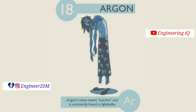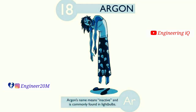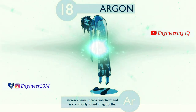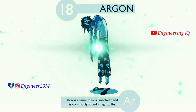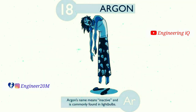Argon: atomic number of argon is 18. Argon's name means inactive, and it is commonly found in light bulbs. It is denoted by Ar.